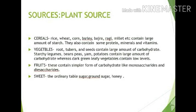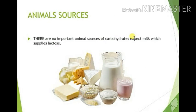Next, let's look at how carbohydrates are obtained from animals. Whether milk contains carbohydrates. Animal sources: there are no important animal sources of carbohydrate except milk, which supplies lactose. The main principal component of carbohydrate in milk is lactose.